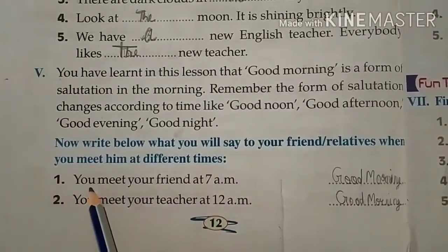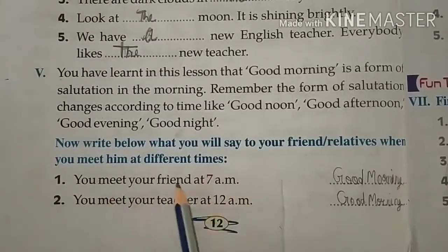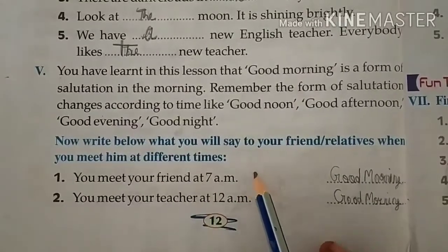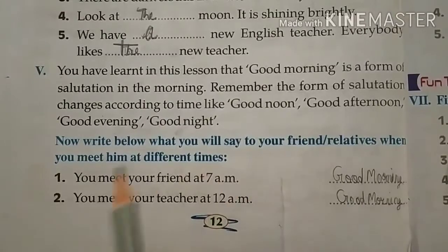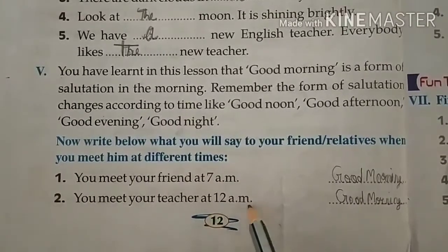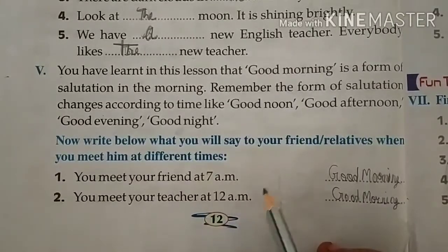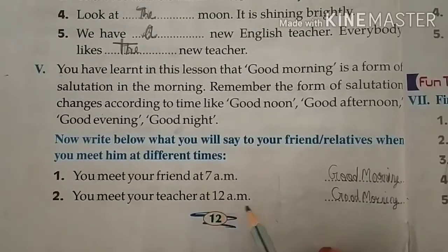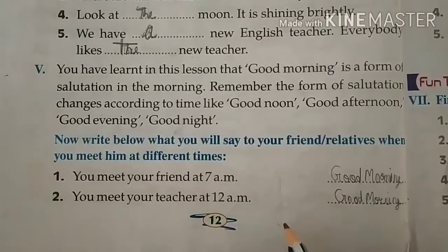First आता है — You meet your friend at 7 a.m.। जब आप सुबह 7 बजे अपने दोस्त को मिलोगे तो आप क्या कहोगे? Good Morning। Next — You meet your teacher at 12 a.m.। यानि दोपहर के 12 बजे, 12 बजे से थोड़े से पहले का time है, तो इसको हम क्या कहेंगे? Good Morning।